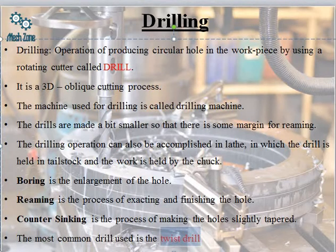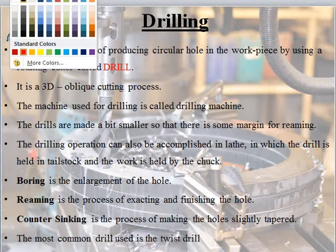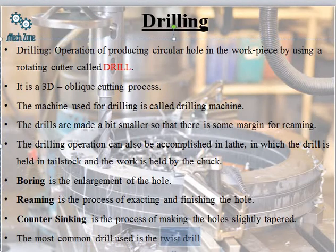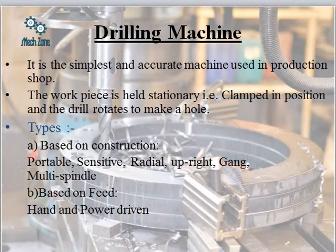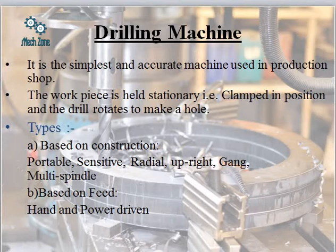The drilling machine is the simplest and most accurate machine generally used in a production shop. The workpiece is held stationary — it is clamped — and the drill rotates to make a hole in the workpiece.